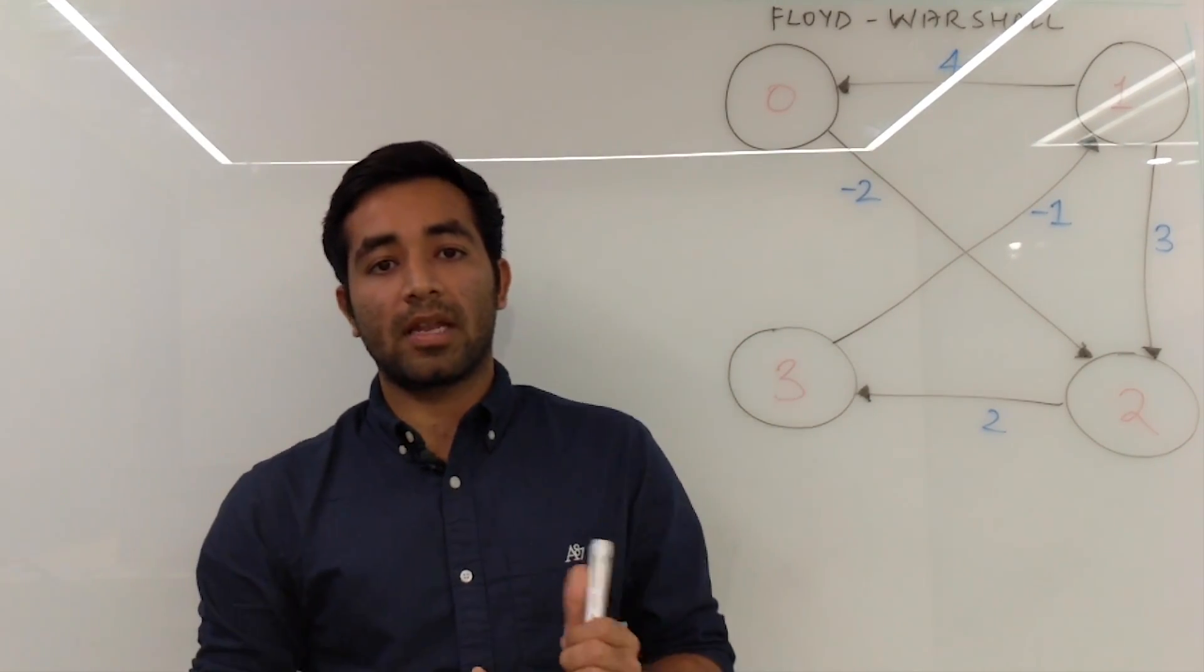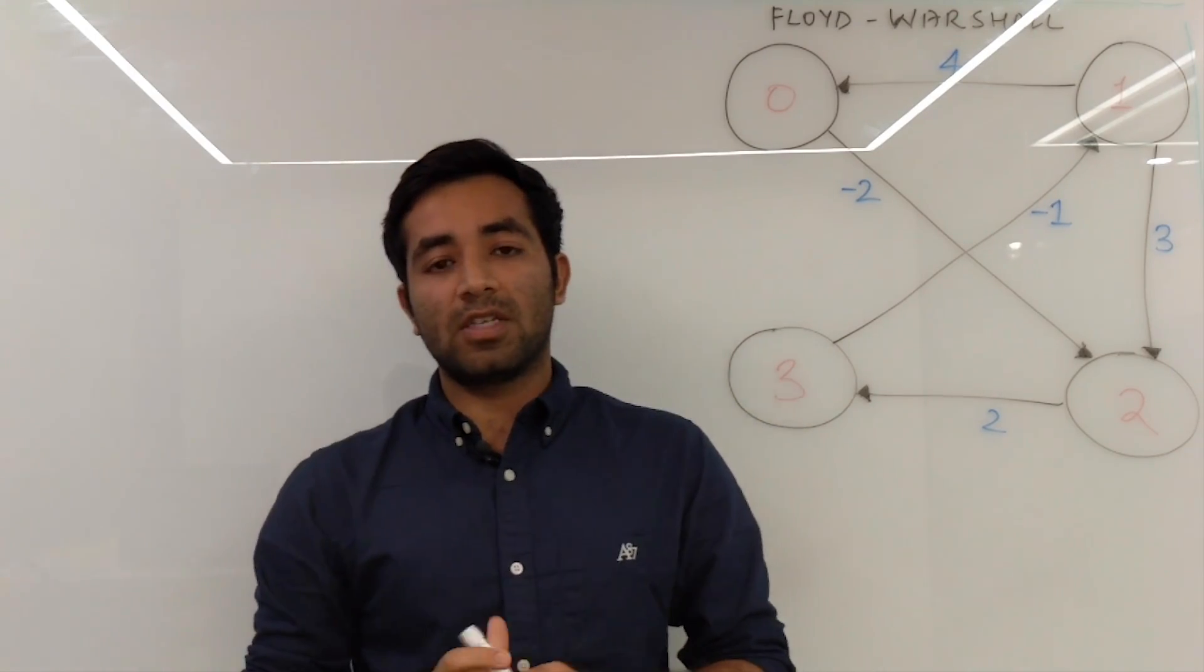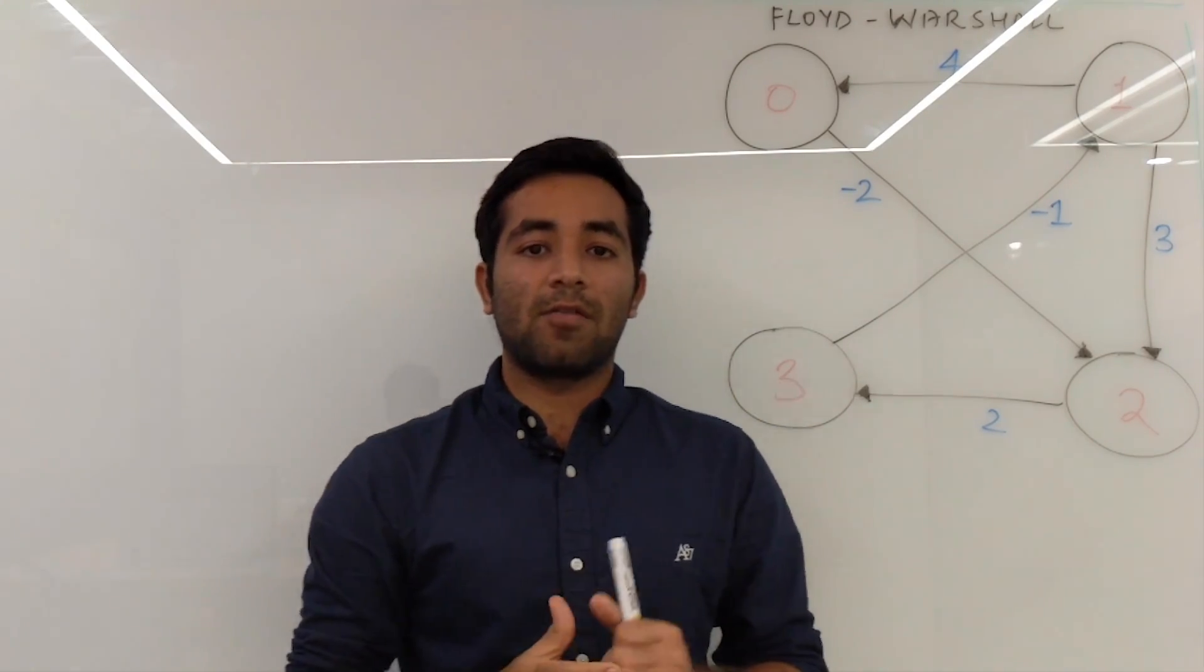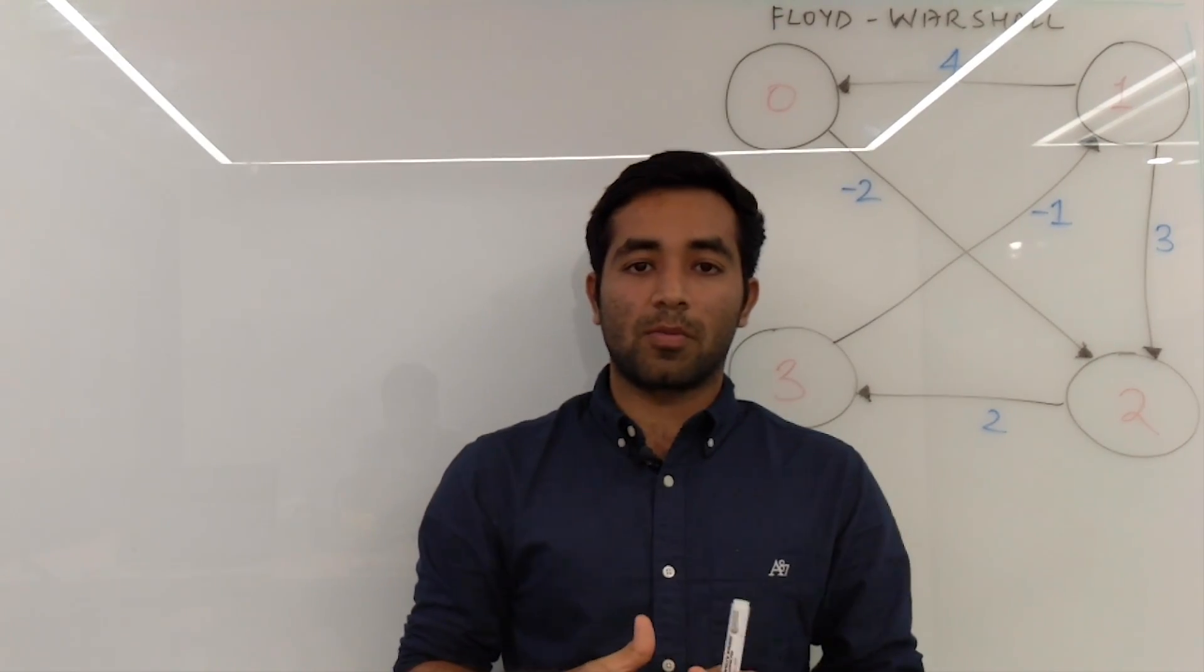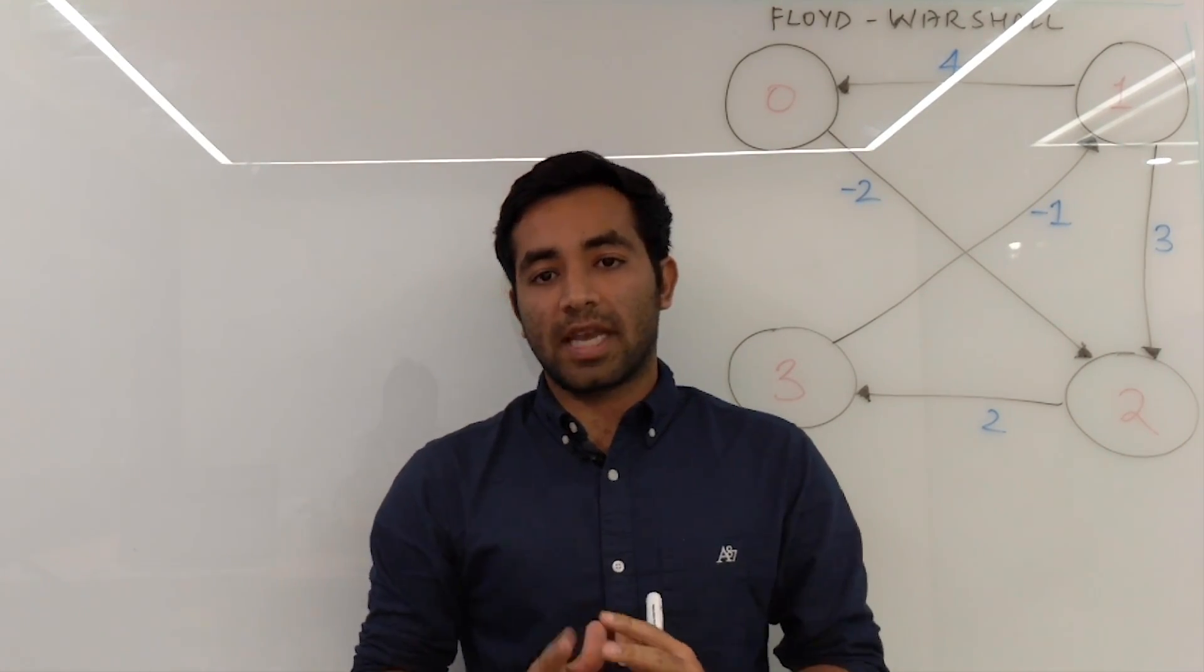Now the major difference between this algorithm and Dijkstra is that Dijkstra doesn't allow you to have negative edges in your graph, while in Floyd-Warshall it does. It solves the problem even when negative edges are there, but not negative cycles.